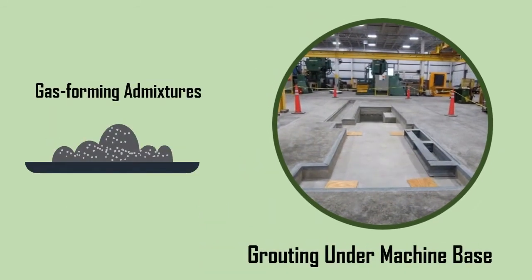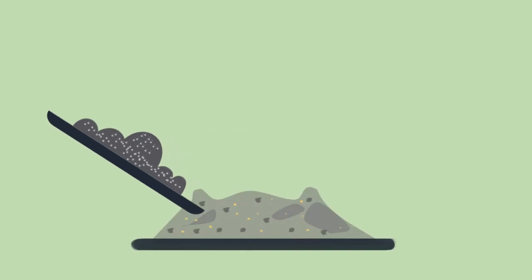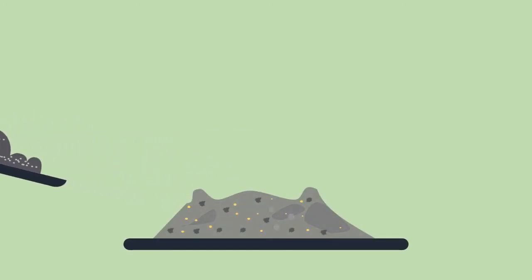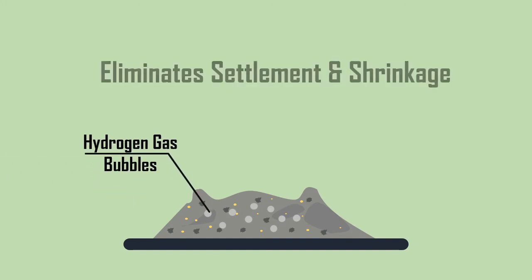Gas forming admixtures are used where grouting is done in completely confined areas, such as under machine bases. Aluminum powder is the most commonly used agent, which chemically reacts and forms small bubbles of hydrogen and produces expansion of the grout. This expansion eliminates settlement and shrinkage.